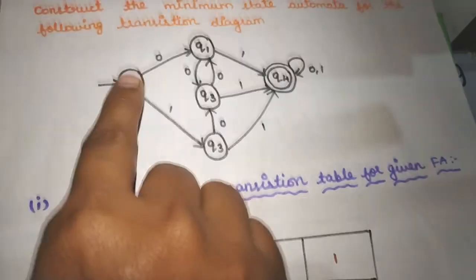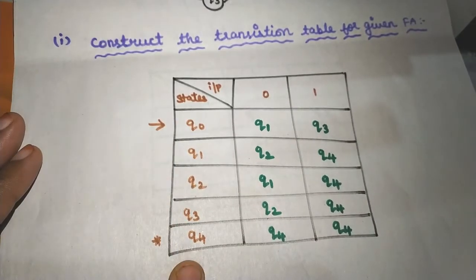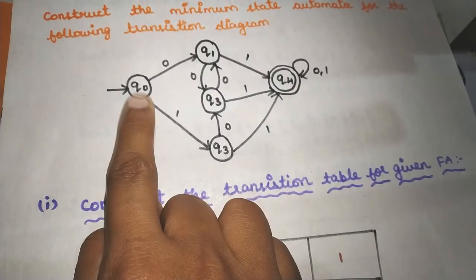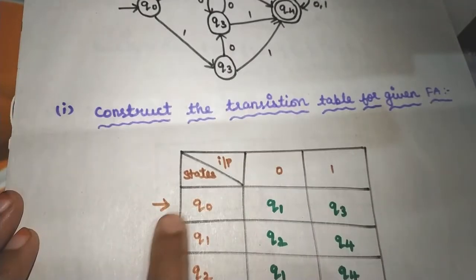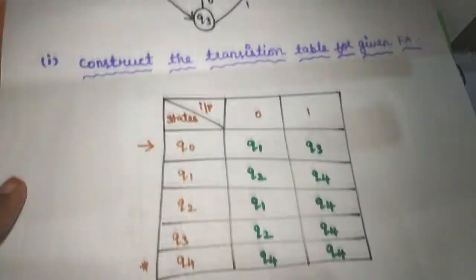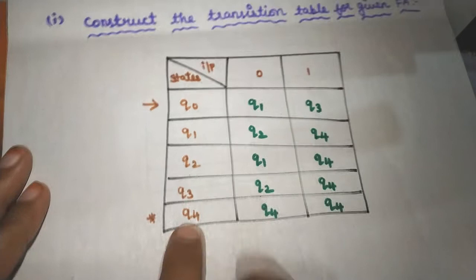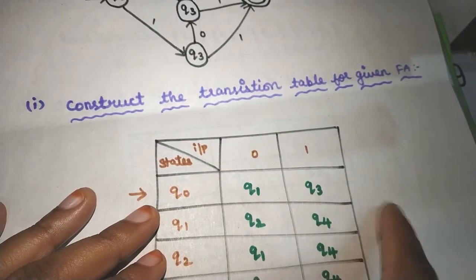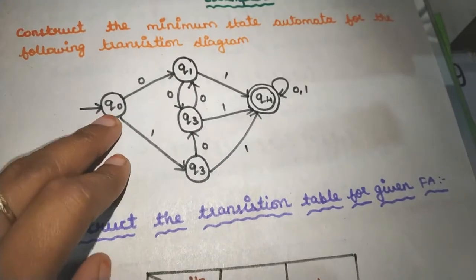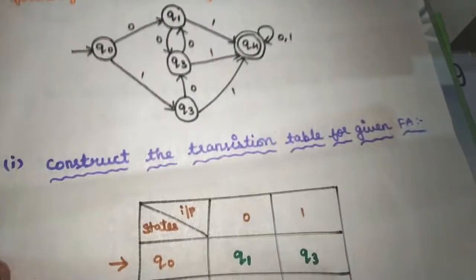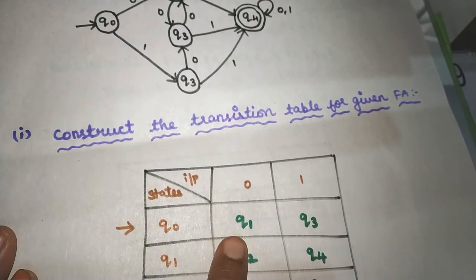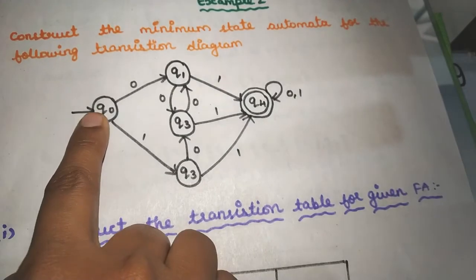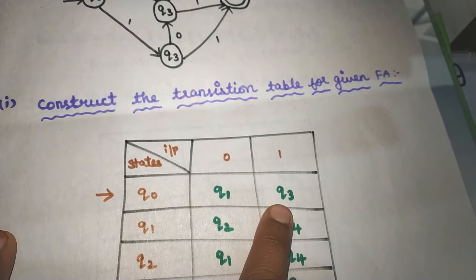You can see the states Q0, Q1 up to Q4. Q0 is the starting state, and Q4 is the final state. For each state, you can see what input goes to which state — Q1 is in state 2, Q0 is state 0, Q0 is in state 3.